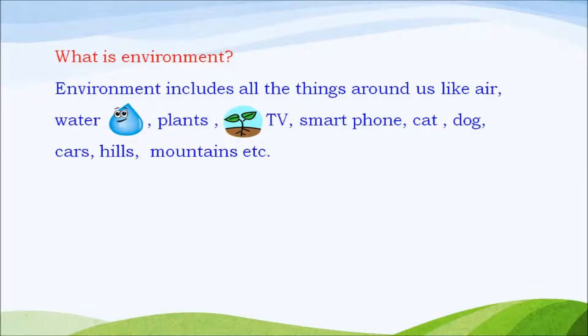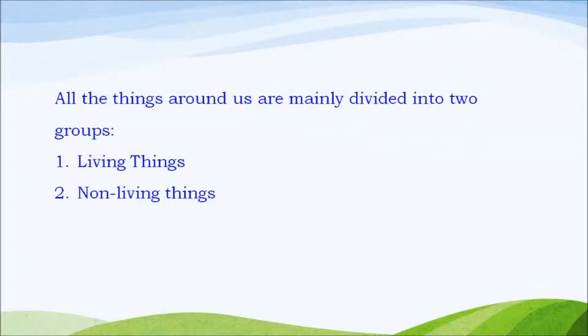Every day, we see many things around us like plants, animals, water, books, bags, vehicles and many more things. All these things that we see around us make the environment. So, what is environment? Environment includes all the things around us.